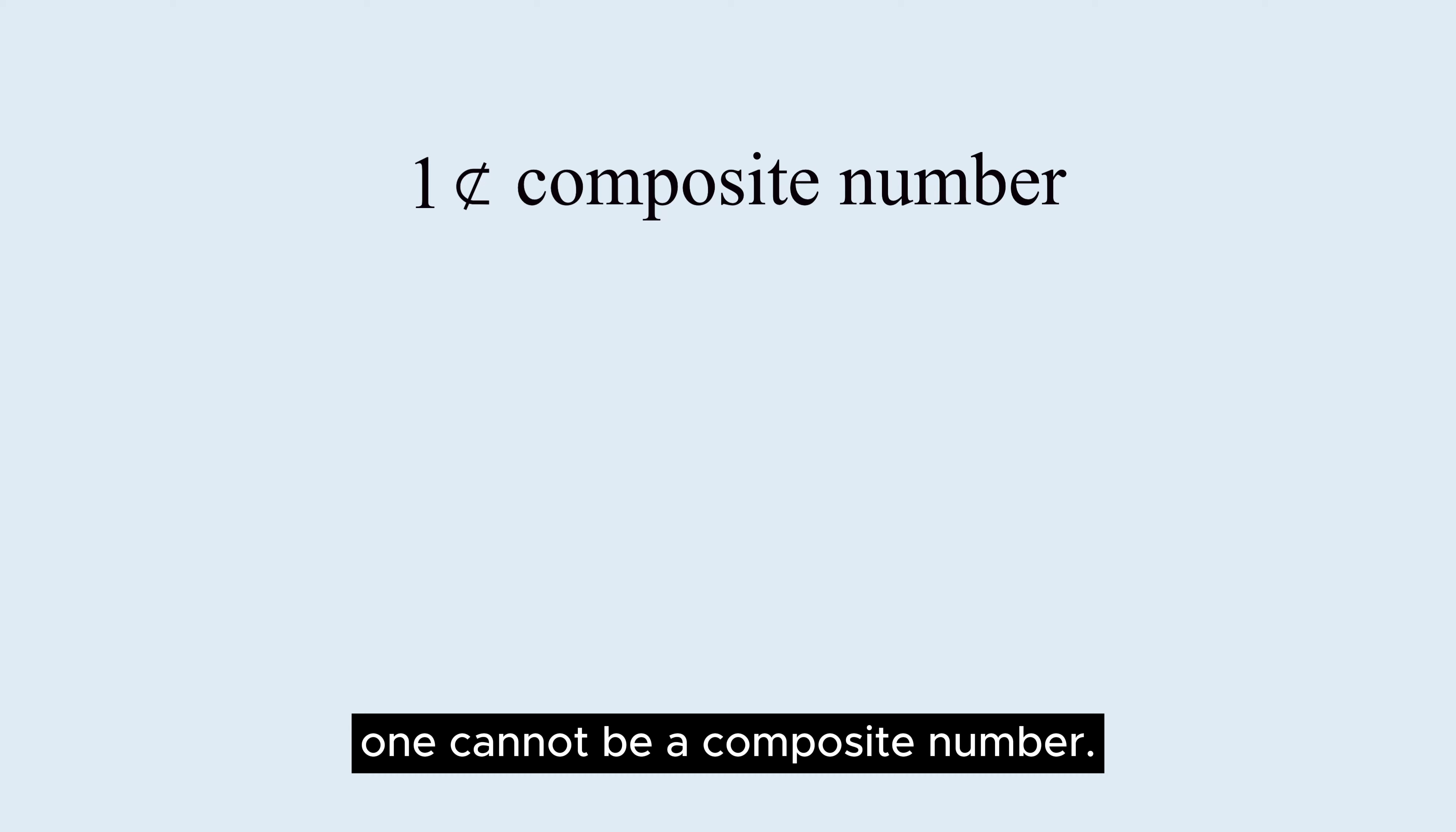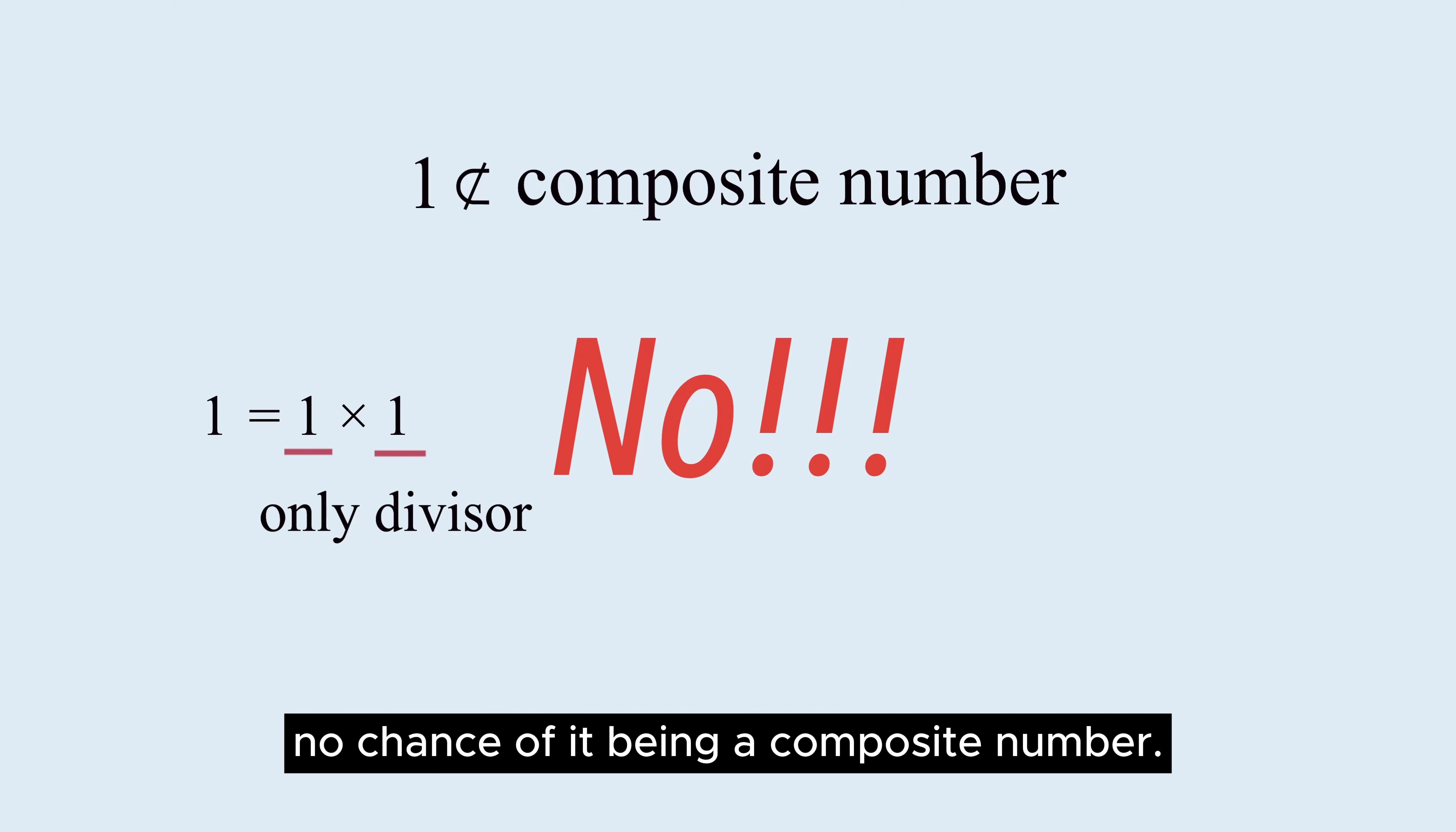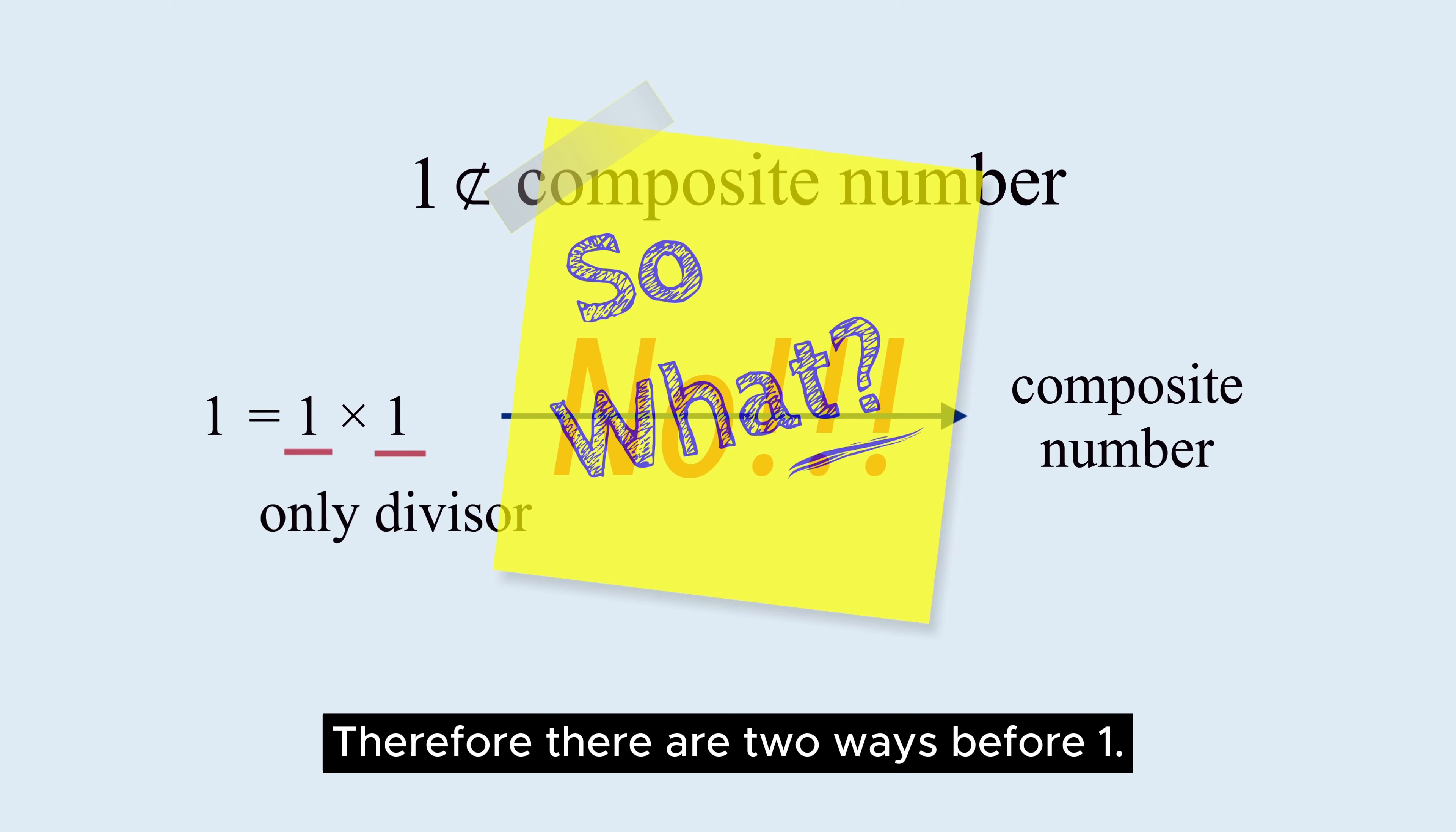First of all, 1 cannot be a composite number. Since 1 is only divisible by 1, it has only one divisor. There is absolutely no chance of it being a composite number.